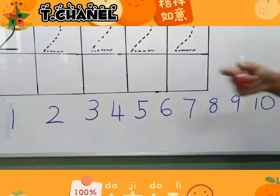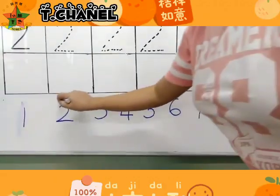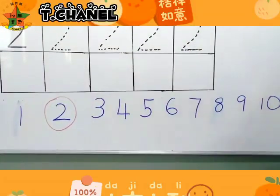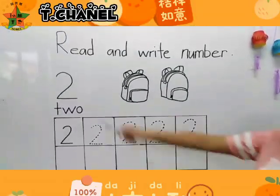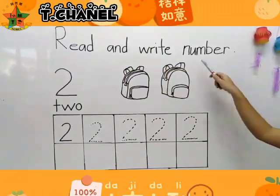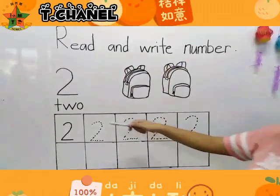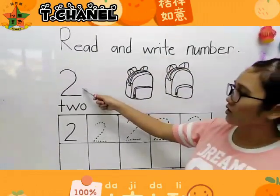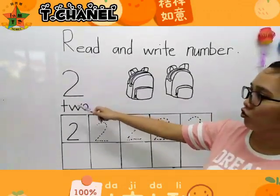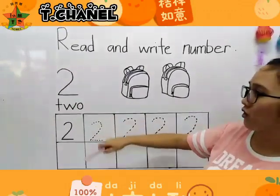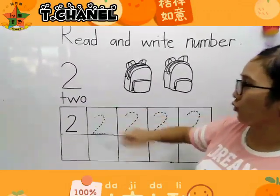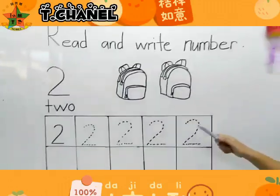Today our lesson is number 2. Read and write number. Okay, children, what number is this? This is number 2. 2.